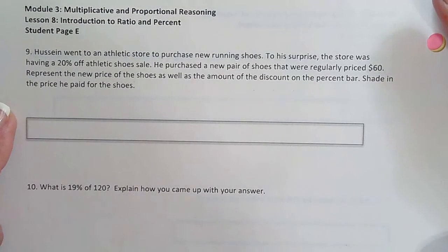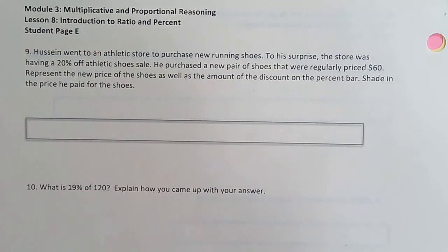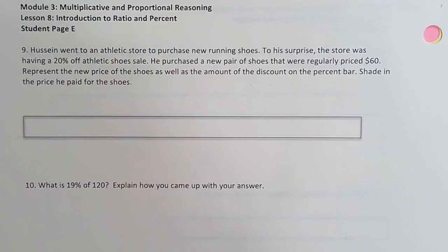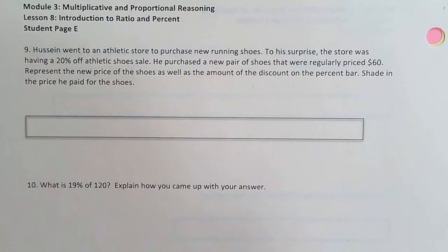So I did put number 9 on the test. And so for that reason, I think that you should shut off the video and try to do it on your own. Draw a picture, see if you can answer the questions. They have two questions. Shade in the price he paid for the shoes. Represent the new price as well as the discount. So you should try that one on your own, okay?